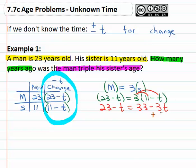We want the variable on one side so we'll add three t to both sides. Twenty-three plus two t equals thirty-three.